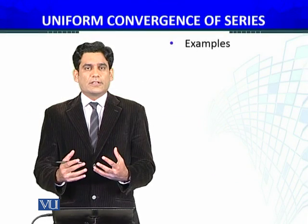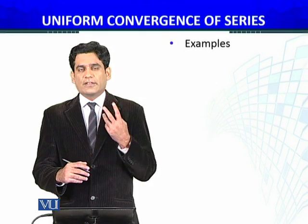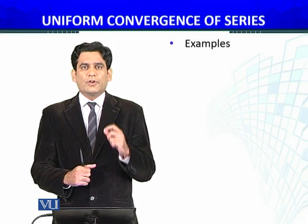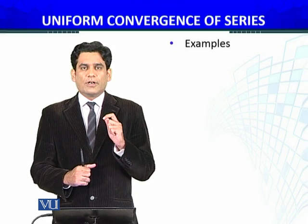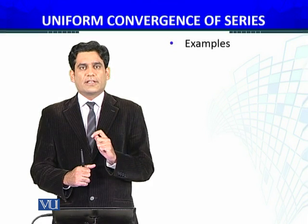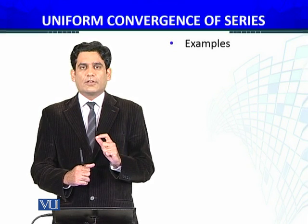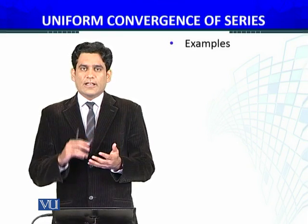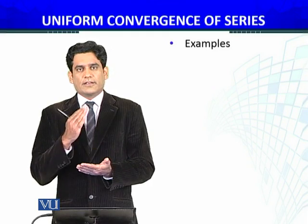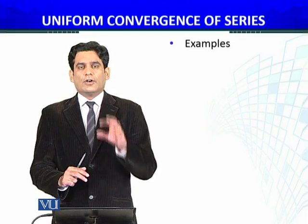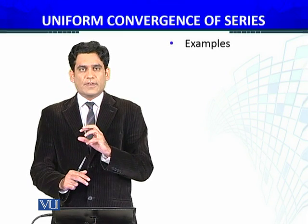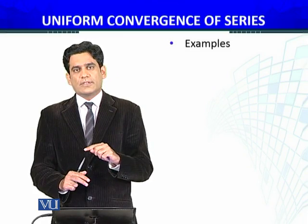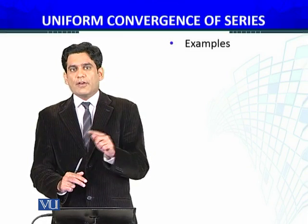So what we have done is applied that particular result on three examples. The last two examples had their uniform convergence proved using the Dirichlet test, where fn = f(n) × g(n) with certain conditions. The result we applied is: if a series of functions is uniformly convergent, converges to some f(x), and each term of the series is continuous at x equals x naught, then so is f — f will also be continuous.